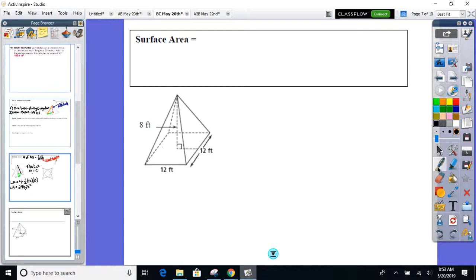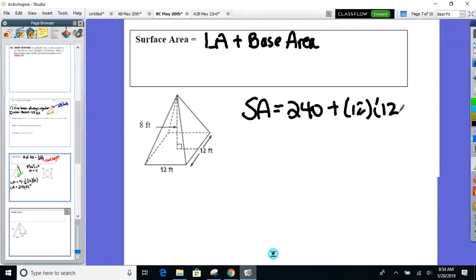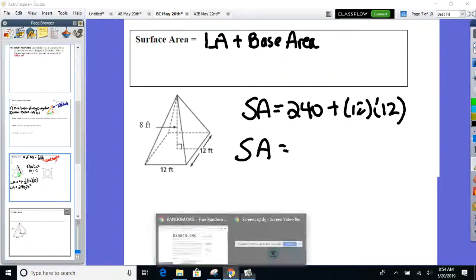Surface area. It's just going to be lateral area plus the base area. We already did the hard work. We know the lateral area is 240. How am I going to find the base area? What is the shape of the base? They're all regular. So it's a square. Area of a square. So length times width in this case. 12 by 12.